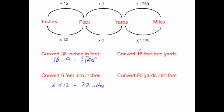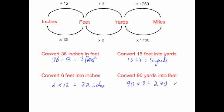Next, convert 15 feet into yards. To go from feet into yards you divide by 3. So we're going to do 15 divided by 3, which is equal to 5. So 15 feet is equal to 5 yards. Next, convert 90 yards into feet. To go from yards into feet you multiply by 3. So 90 times 3 is equal to 270 feet.